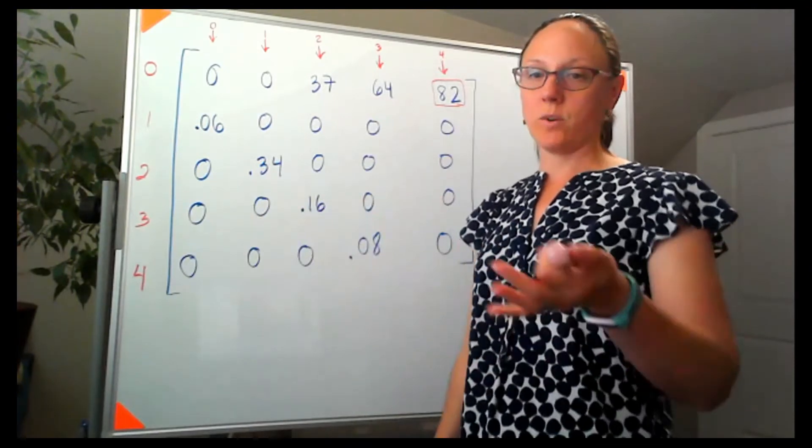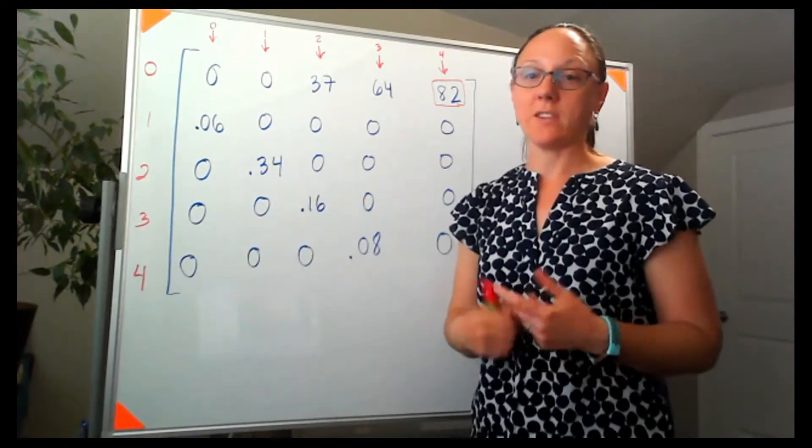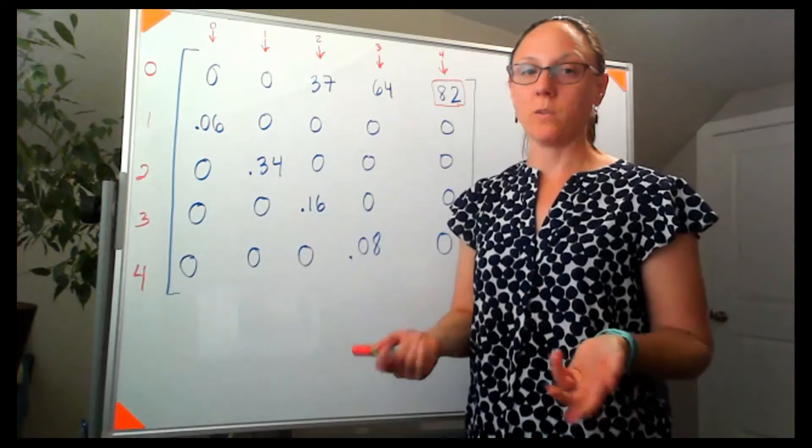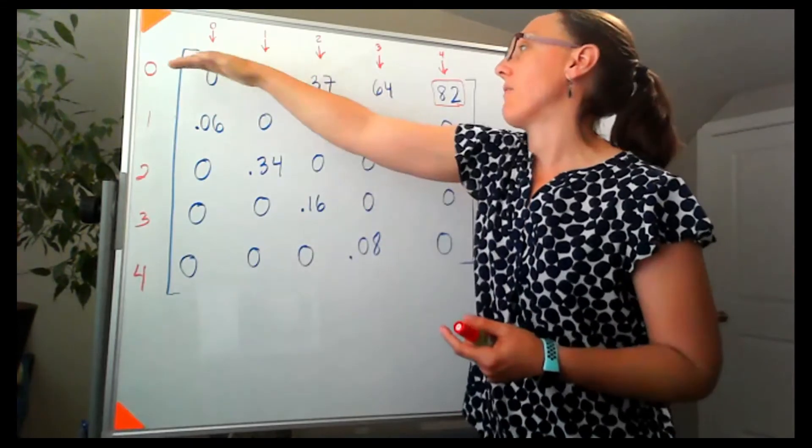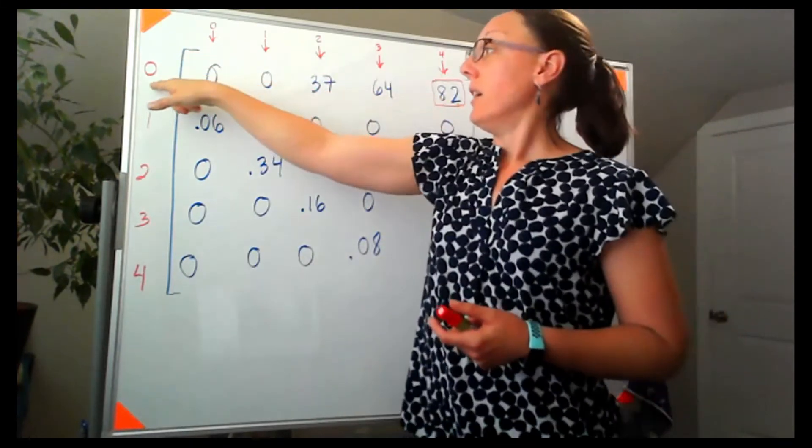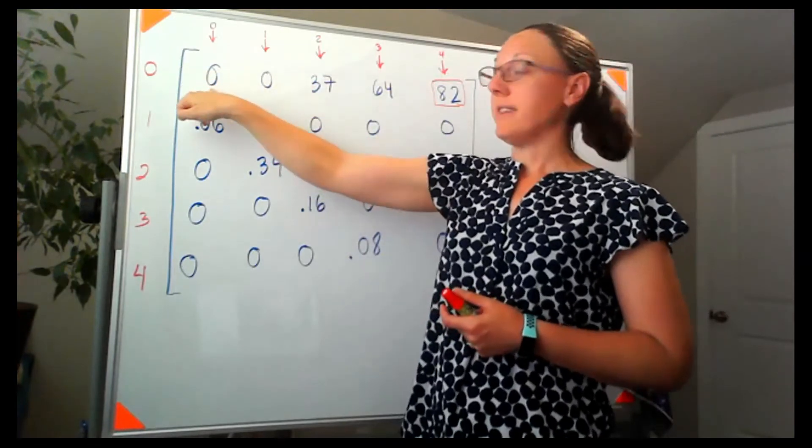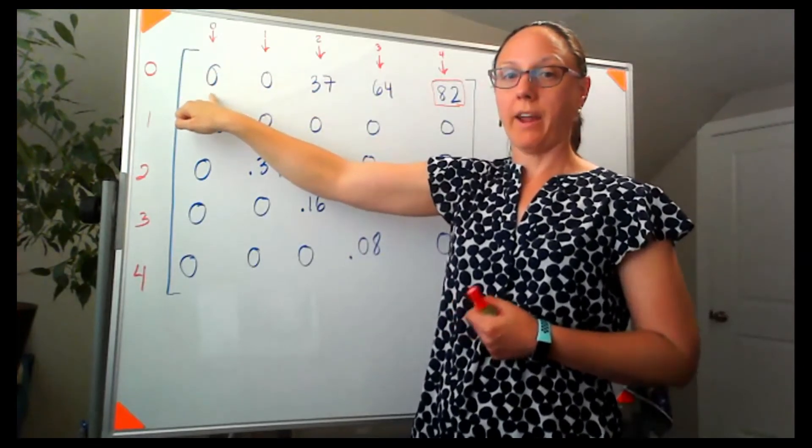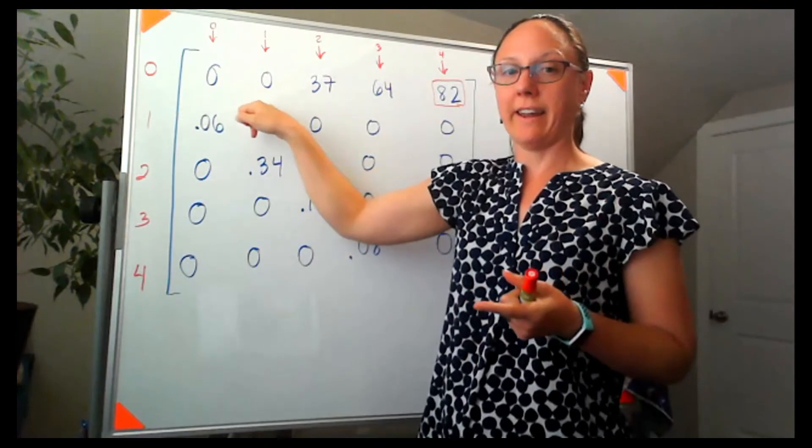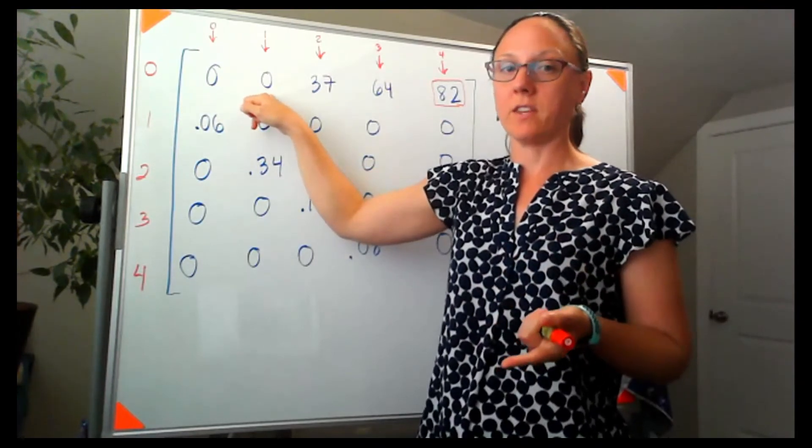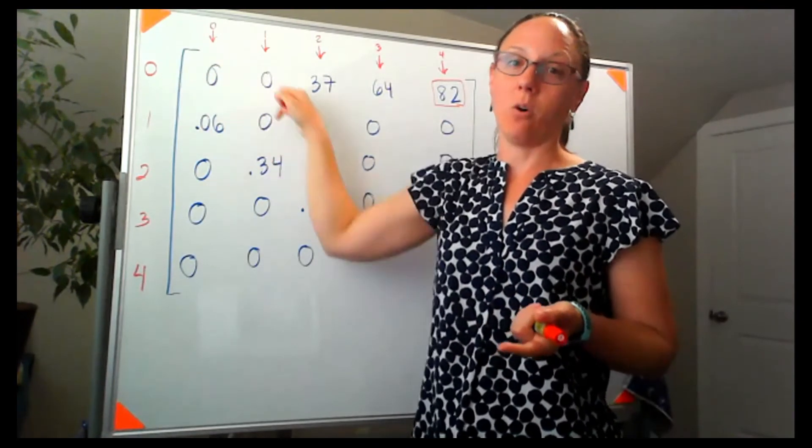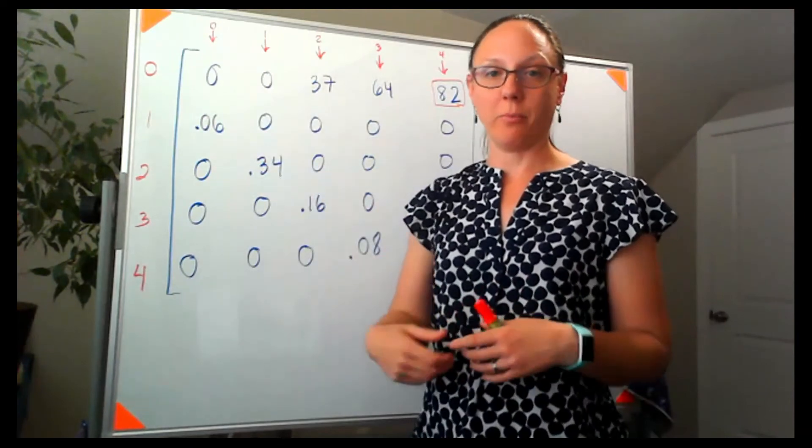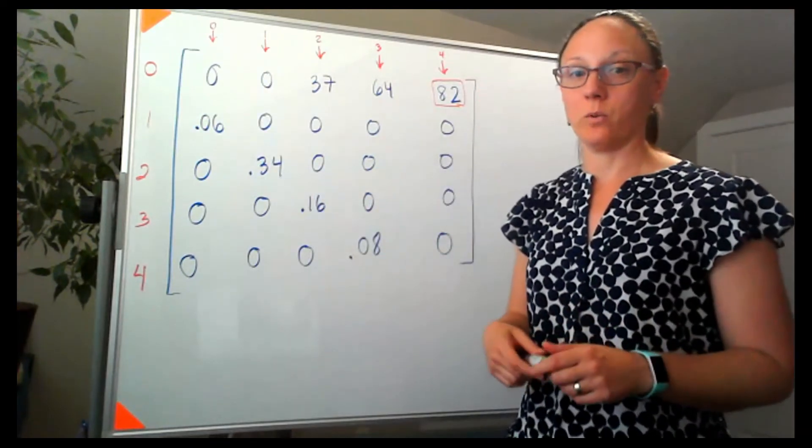That last question, can age class one females reproduce? And the answer to that is no, because if I look at the first row, this tells me that my age class zero and age class one females produce on average zero offspring. So that would tell me they're not able to reproduce.